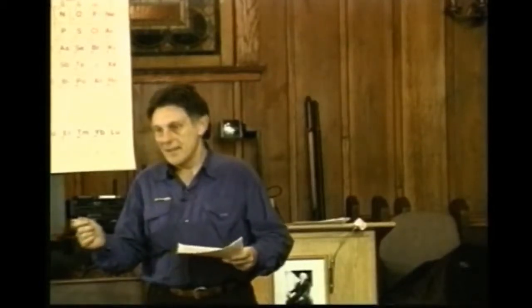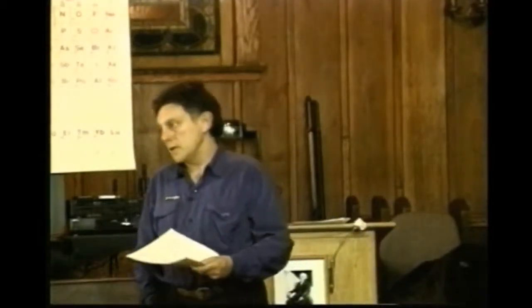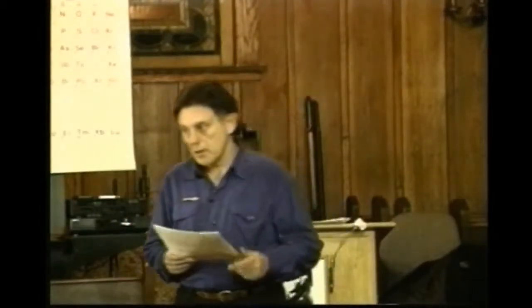For instance, in the natrums we take Natrum muriaticum as being the sort of archetype of the natrums, but it probably isn't so — it's probably Natrum carbonicum, except we're much more familiar with Natrum muriaticum because it occurs more commonly. So in the baritas, Barita carbonicum is the sort of archetype, but it may not be the most commonly occurring one in our time, according to the people we see and the pressures of society.